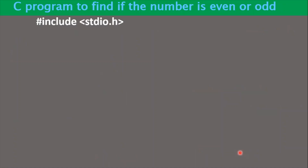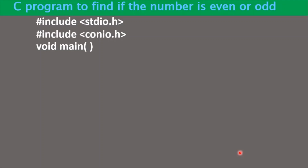Let us develop the program. First, include the stdio.h header file, which stores the definitions of printf and scanf. One more header file needed is conio.h, which stores definitions of functions like getch and clrscr. Write the main function, declare a variable, and take the number from the user. We declare an integer variable n. The answer will be displayed as a sentence, so no additional variable is needed.